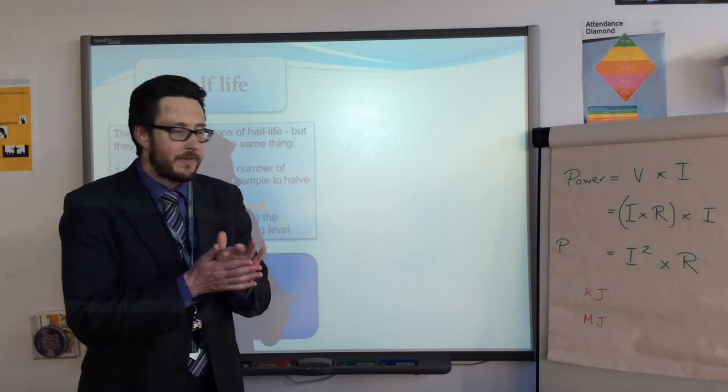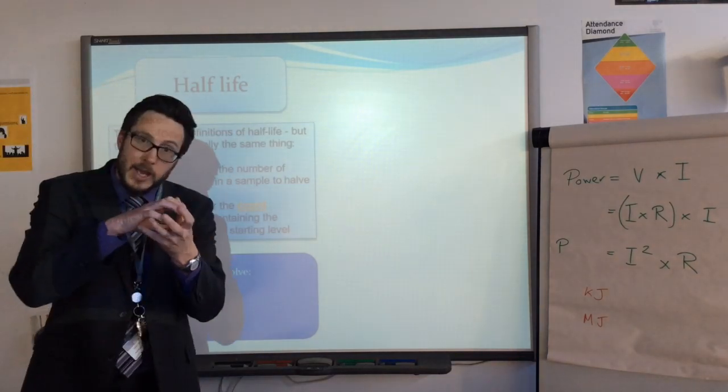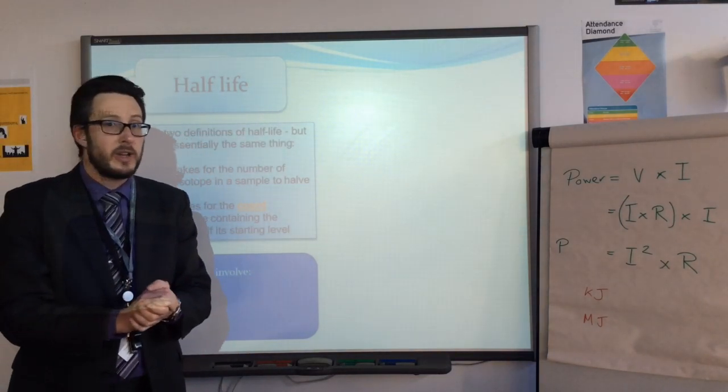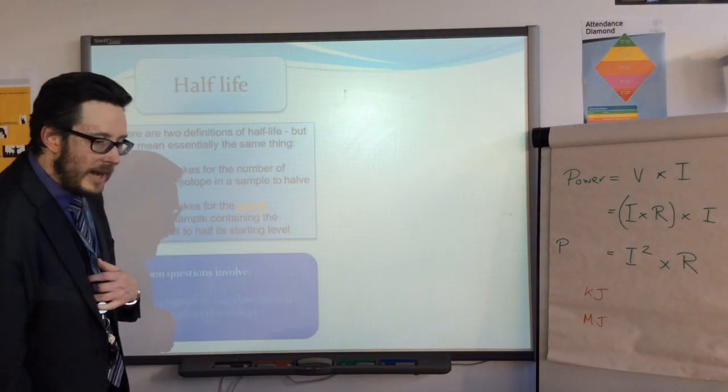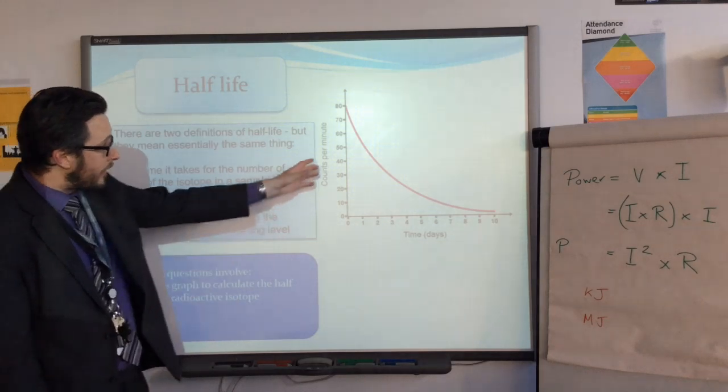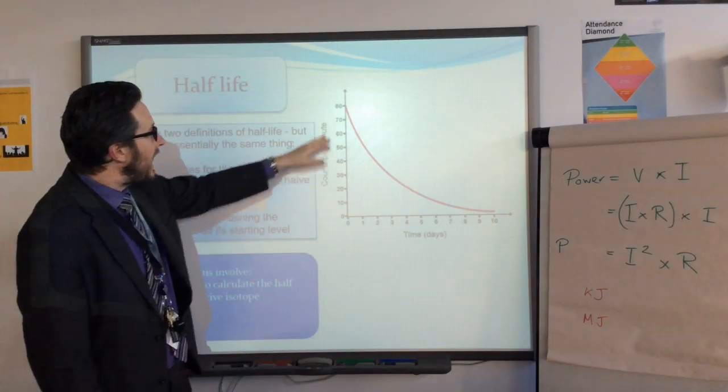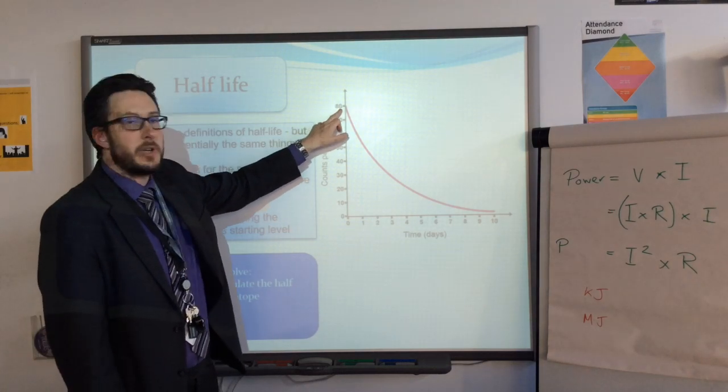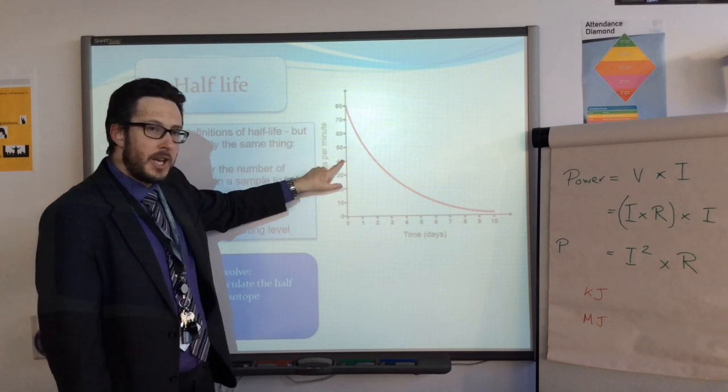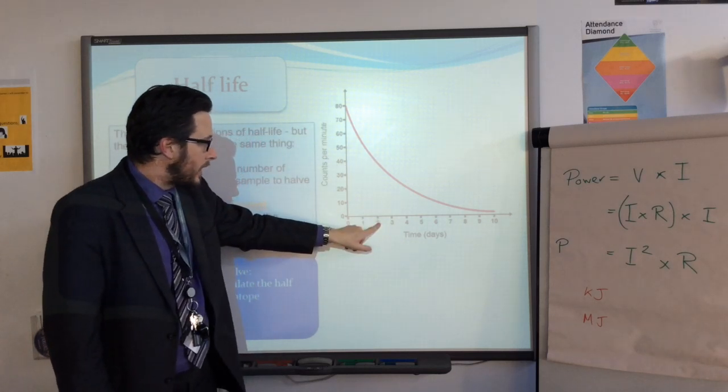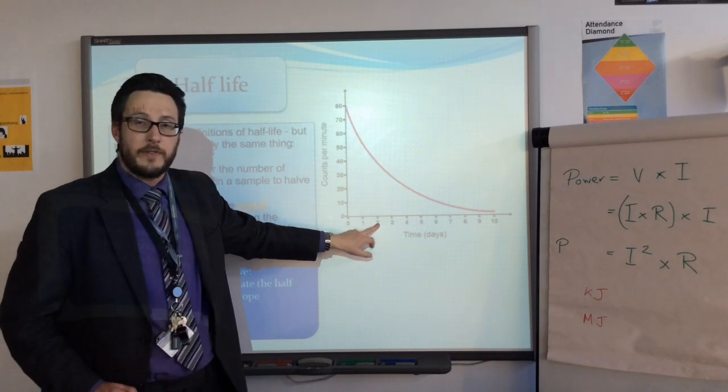I did want to just finish off by talking about two things. Half-life, just briefly. Half-life means two things. It's the amount of time it takes for the number of nuclei to actually break down by half, or by the count, the radioactive count, to drop by half. Common questions involve a graph, such as this. You may have to plot it, and then work out the half-life. The way you do that, is if you look at the count at the start, which is 80, work out what half of 80 is, 40. Draw a line across from 40 and down. This is in days, so that's two days.